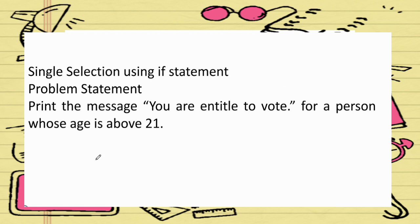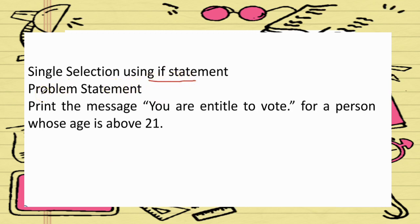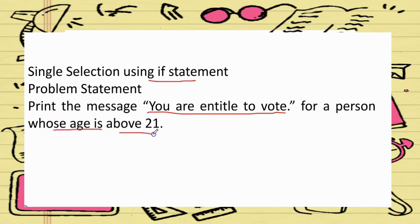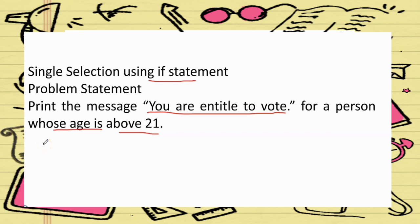First we see the single selection using the if statement. For this problem statement, print the message 'You are entitled to vote' for a person whose age is above 21. For the first step, you must identify IPO.